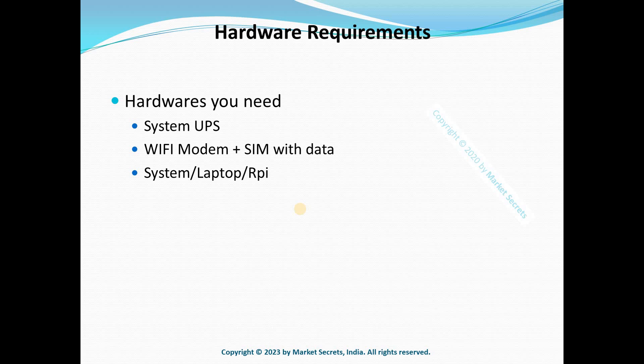Number three: a system, a laptop, or a Raspberry Pi. You need a system to host your code and make it run. I personally use a Raspberry Pi — it's an independent system and I don't want to mix my other stuff with algo trading. A Raspberry Pi costs about three thousand to five thousand rupees; I personally use a Raspberry Pi 3 which costs around three thousand rupees.